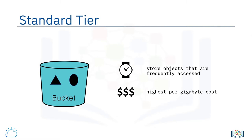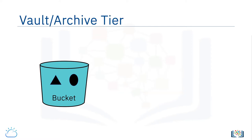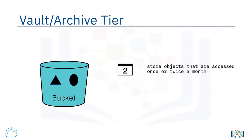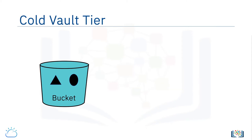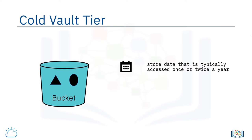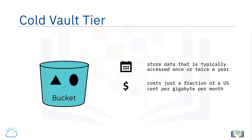A vault or archive tier is where you might store documents that are only accessed perhaps once or twice a month or less, and this will be offered at a lower storage cost. There may also be a cold vault tier where you would store data that is typically accessed only once or twice a year. This storage often costs just a fraction of a US cent per gigabyte per month.